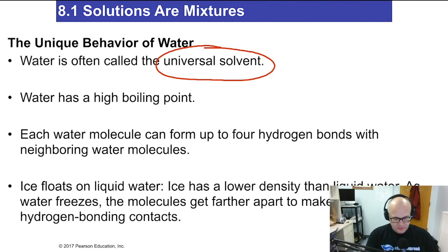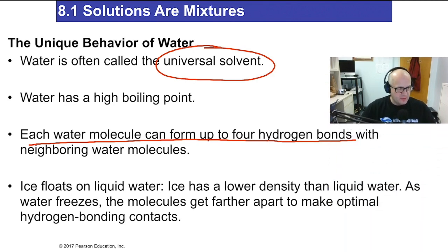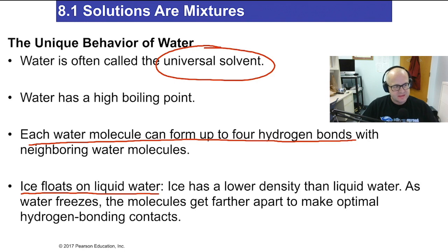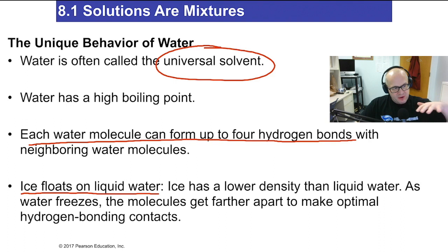Water molecules form hydrogen bonds with neighboring water molecules, making it a high boiling liquid. Ice floats on liquid water because ice is less dense than liquid water. That's why if you live near a lake in the north, you'll see big ice chunks floating on top, and why icebergs coming off the Arctic and down into the Atlantic are floating — because ice is less dense than water.